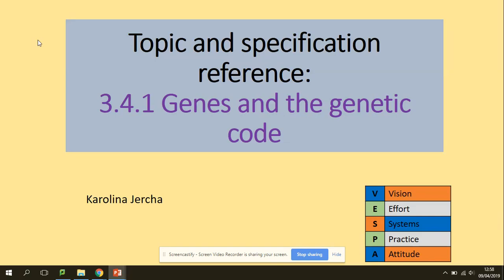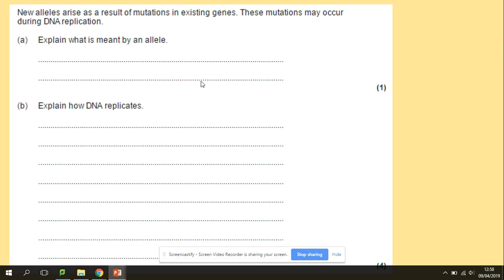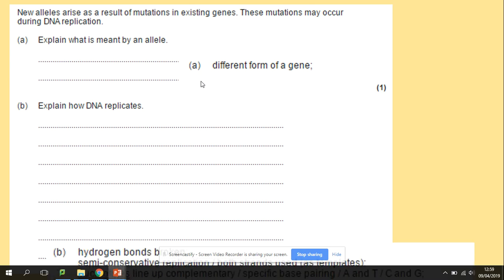Hi guys, welcome to Genes and Genetic Code again. We've got the nature of the genetic code left to discuss. This is the question we finished on in our previous video - explain what is meant by an allele for one mark, so different form of a gene. And from section 1, a quick recap is explain how DNA replicates. Four marks for this. You can pause the video now and let's check.